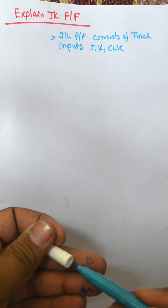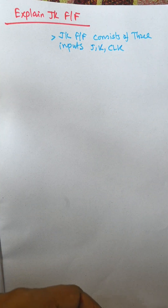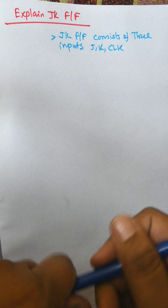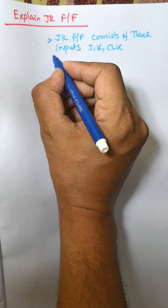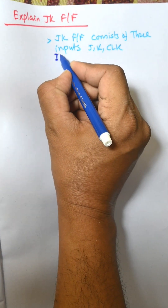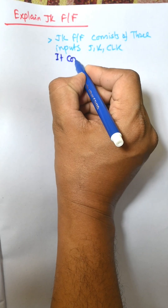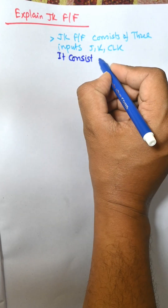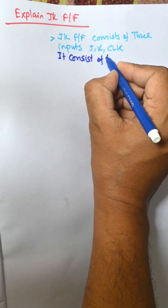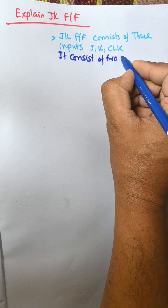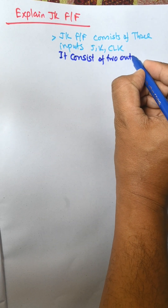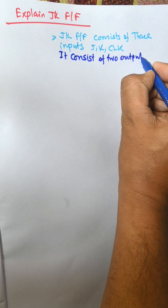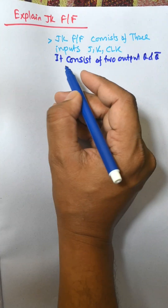It consists of two outputs: Q and Q-bar (QR).